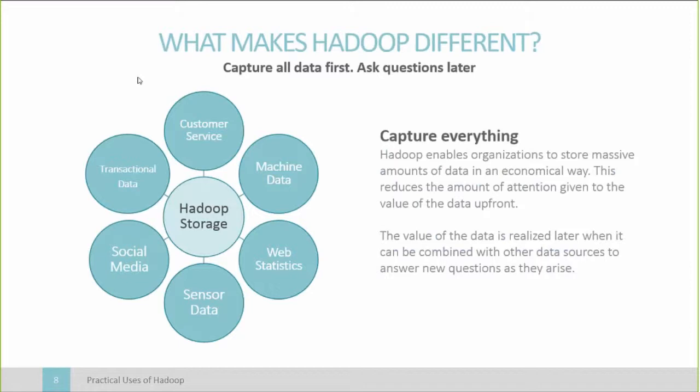Traditionally there's a price associated with storing data — if data is viewed as having little value, it's most likely going to be discarded. With technology like Hadoop, the price associated with storing data is much lower, and as such we're able to capture much more data. The types of data I'm referring to could be customer service and sentiment data, anything logged over a help desk, machine data from a shop floor if you're a manufacturing organization, machines you're actually selling, web statistics, sensor data — that's the idea of the Internet of Things — social media, and of course any other transactional data.